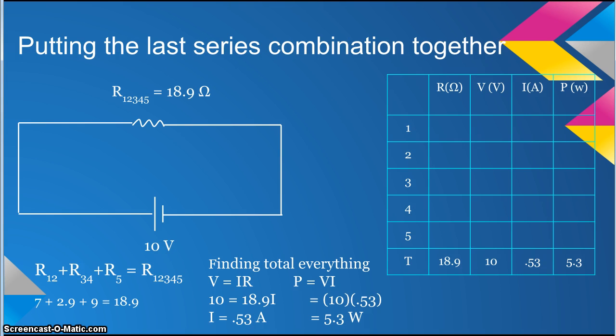Since they are together in series, we can just add the resistance together. R1,2 plus R3,4 plus R5 equals 7 plus 2.9 plus 9, which equals 18.9.